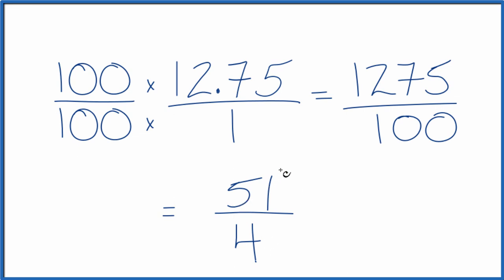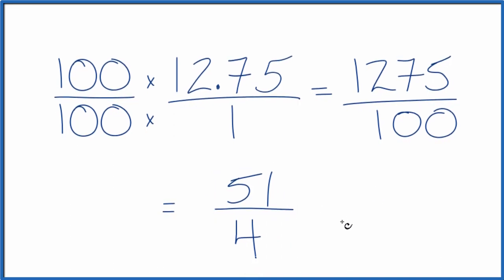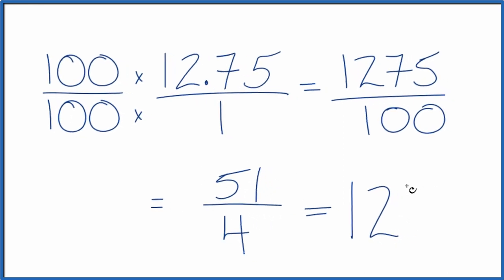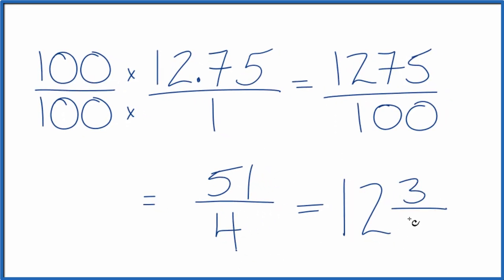This is an improper fraction. 51, the numerator is larger than 4, the denominator. So we could change it to a mixed number as well. 4 goes into 51. 4 times 12, that would equal 48. And with 3 left over, bring the 4 across. So you could write this as a mixed number as well, 12 and 3 fourths.